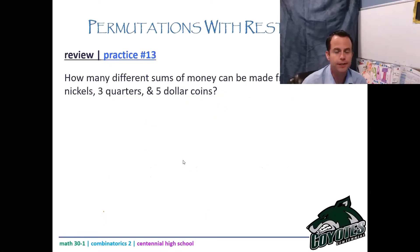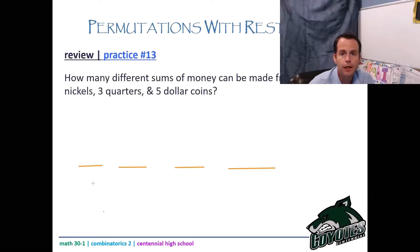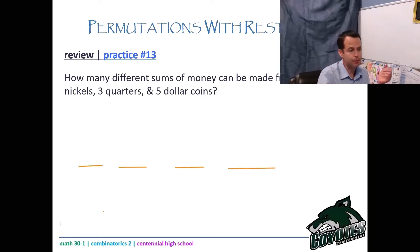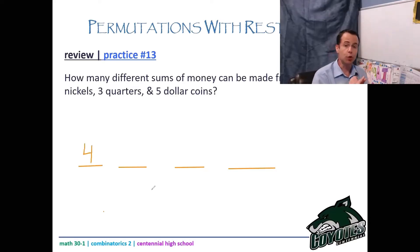The other question that causes stress: how many different sums of money can be made from three pennies, four nickels, three quarters, and five dollar coins? A common mistake is saying we have three pennies so we have three options — that's not true. Nobody said we have to choose a penny. We actually have four options for pennies: zero, one, two, or three pennies.